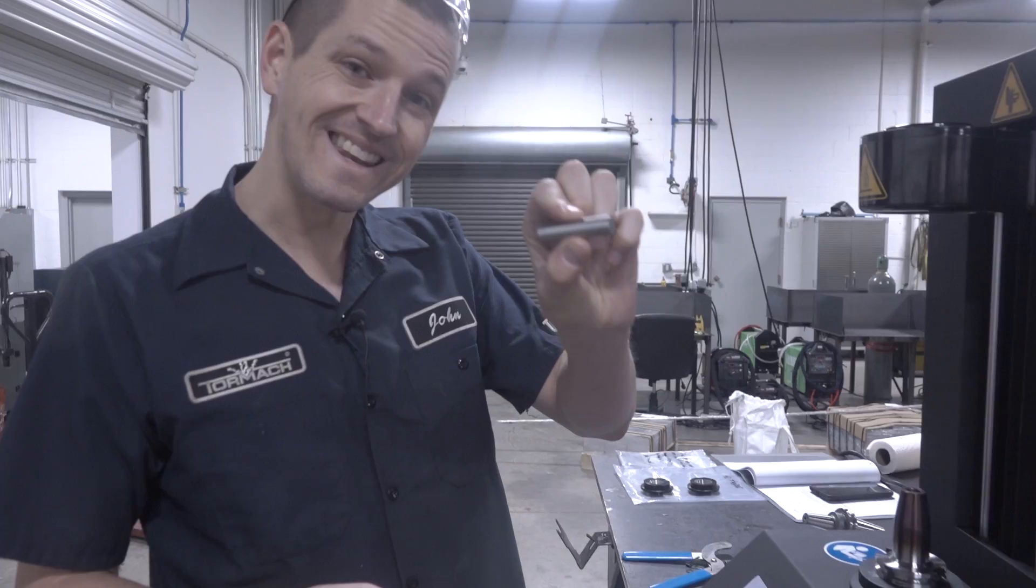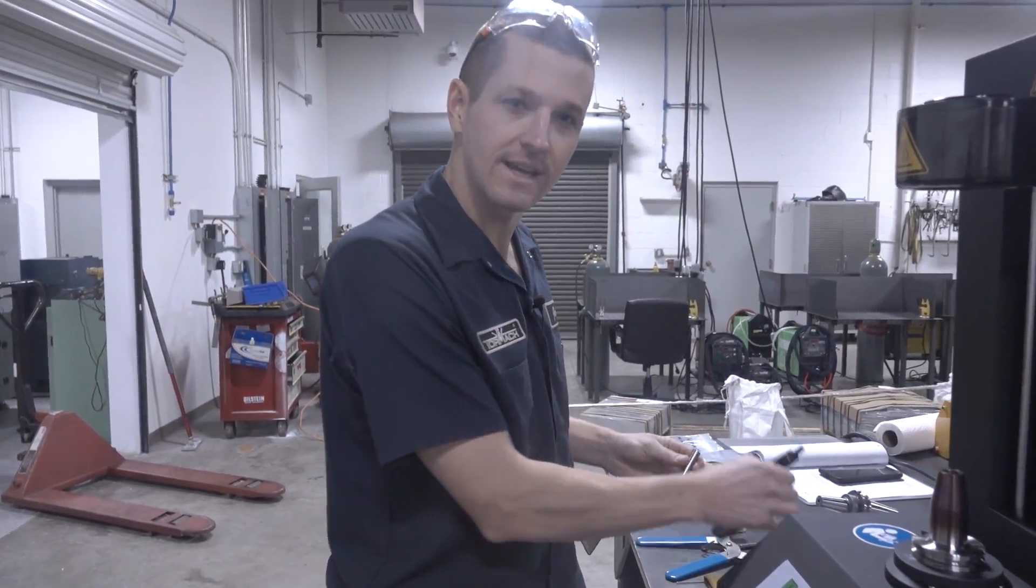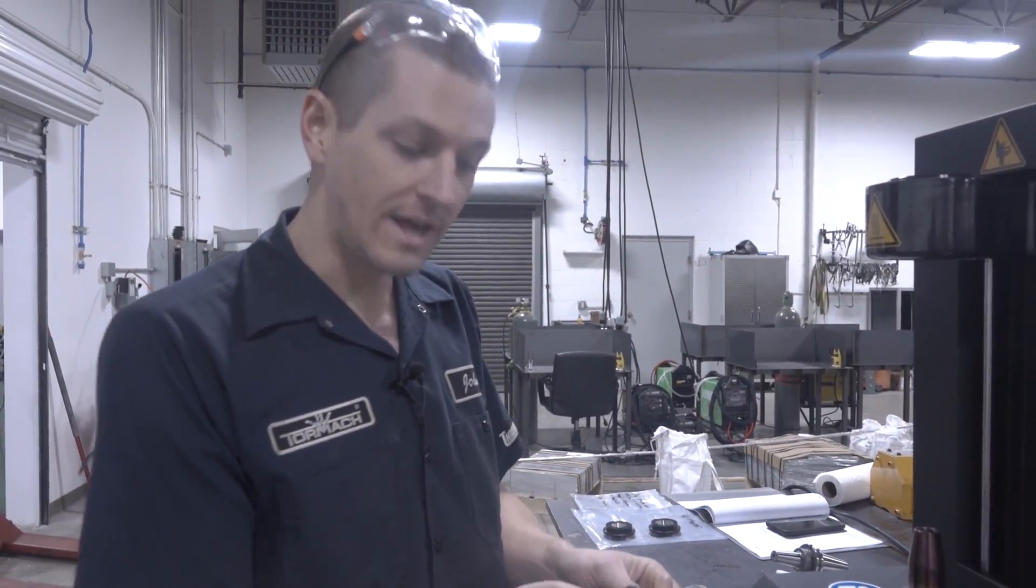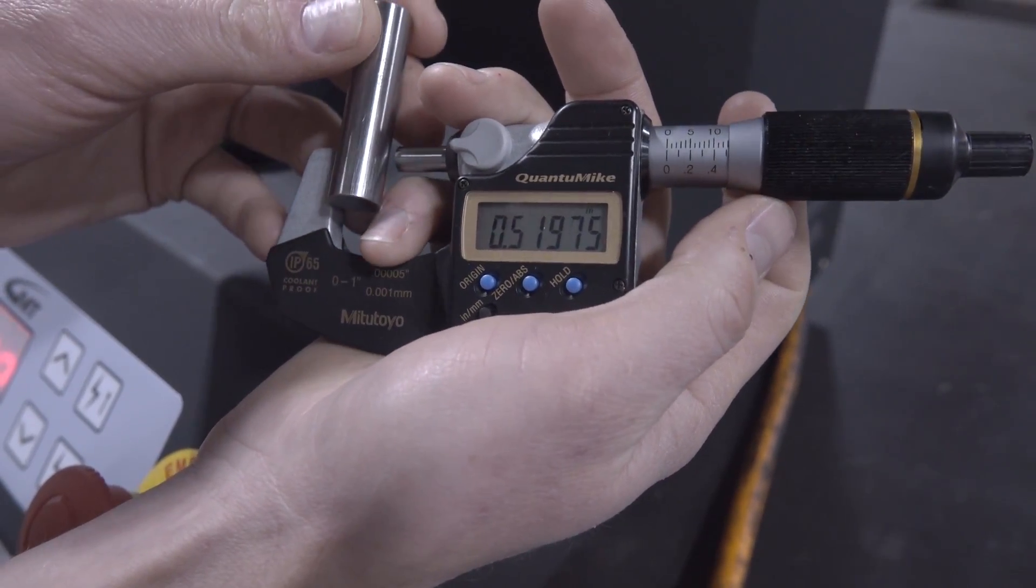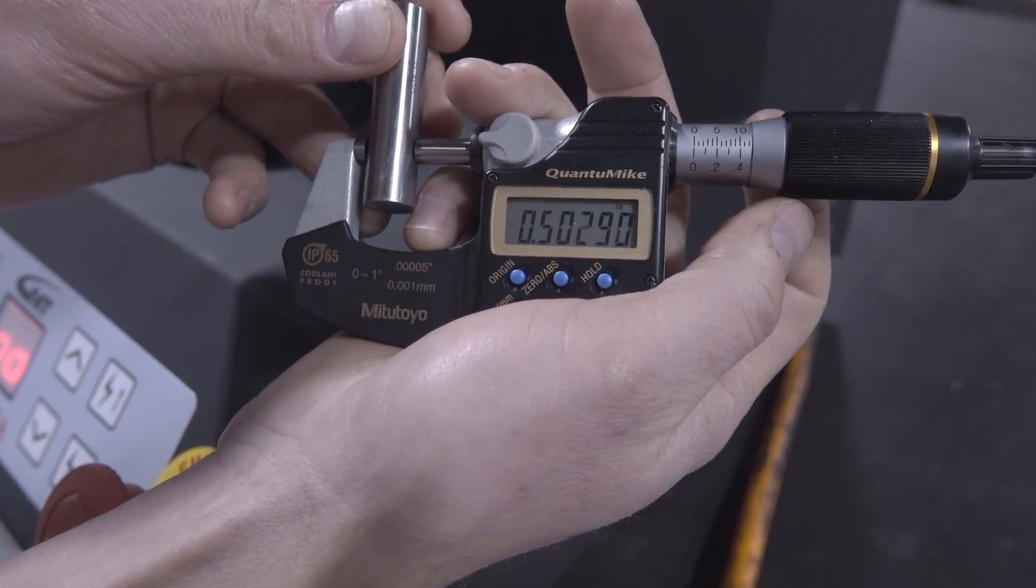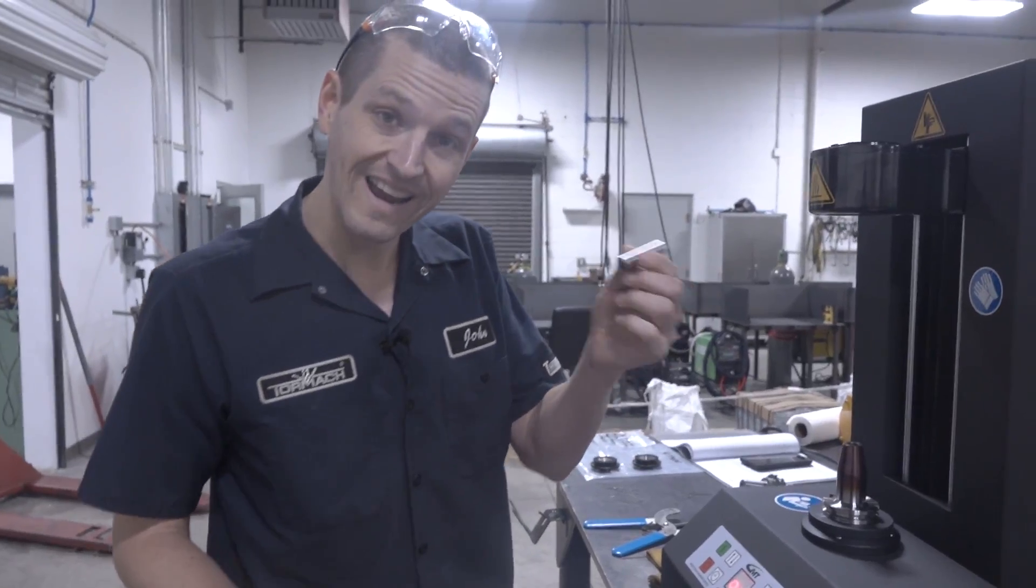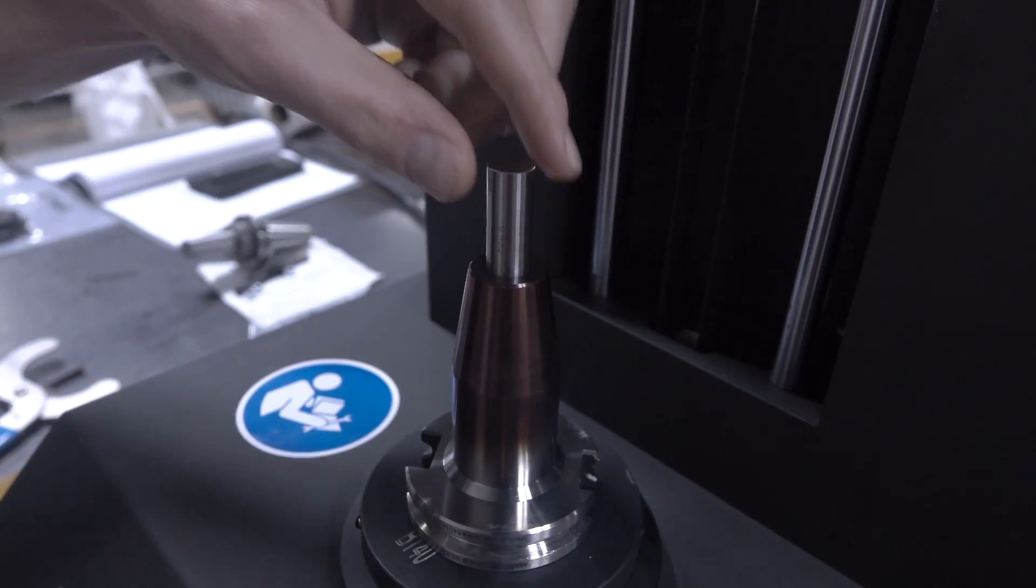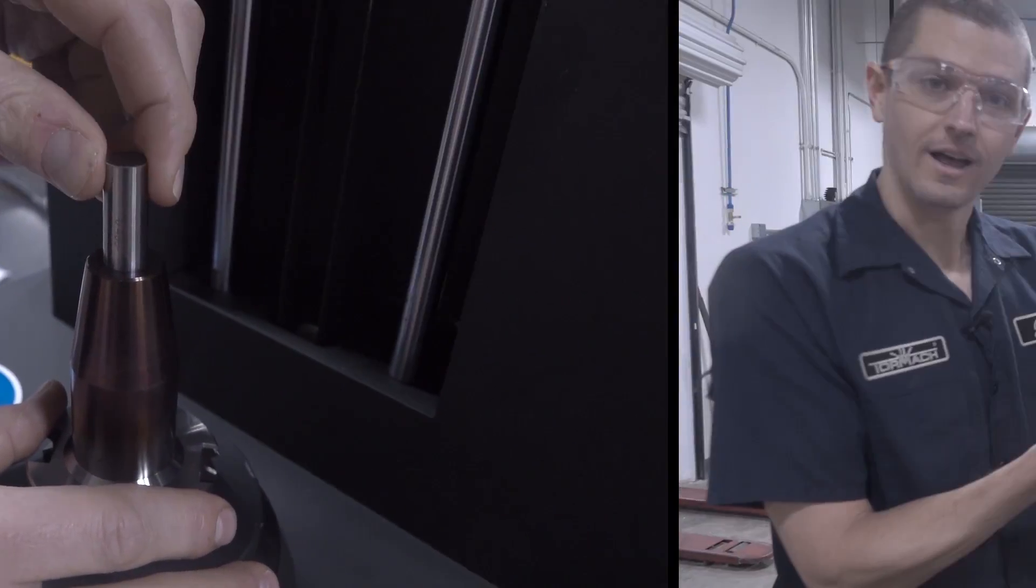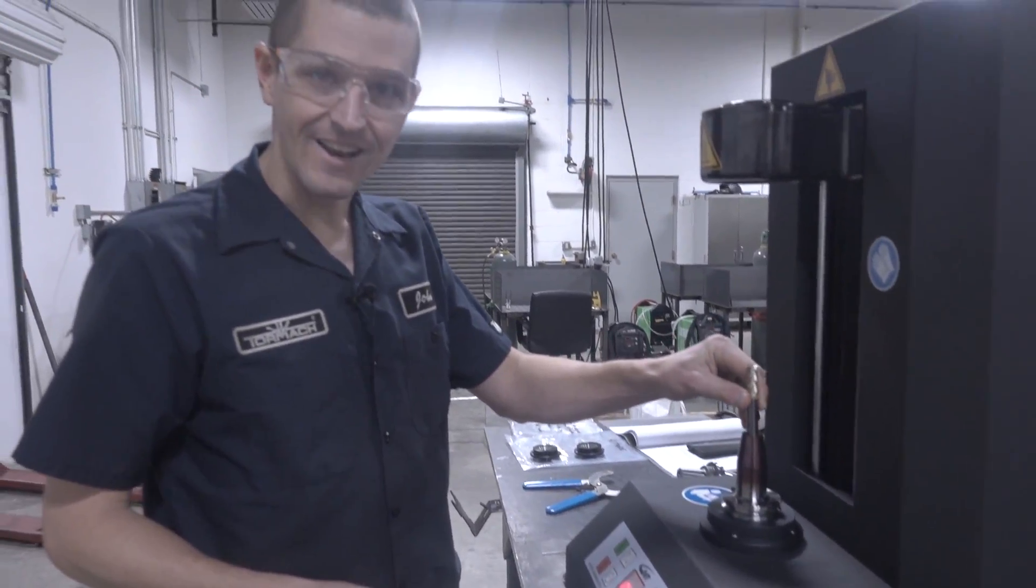This is a 0.499 gauge pin. I have an undersized set. And so most undersized sets are up to two tenths under. And sure enough, we mic this down. They're taking basically all of that two tenths, 0.4988, one thousandth under half an inch. So does the 499 gauge pin fit? Yep, it does. Again, we're cold. Half inch end mill does not fit.